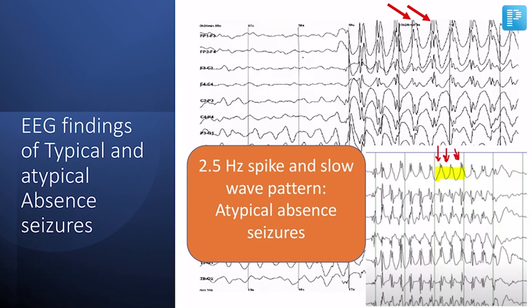In the atypical variety, you might have post-ictal confusion, but in typical absence seizures there is no post-ictal confusion.